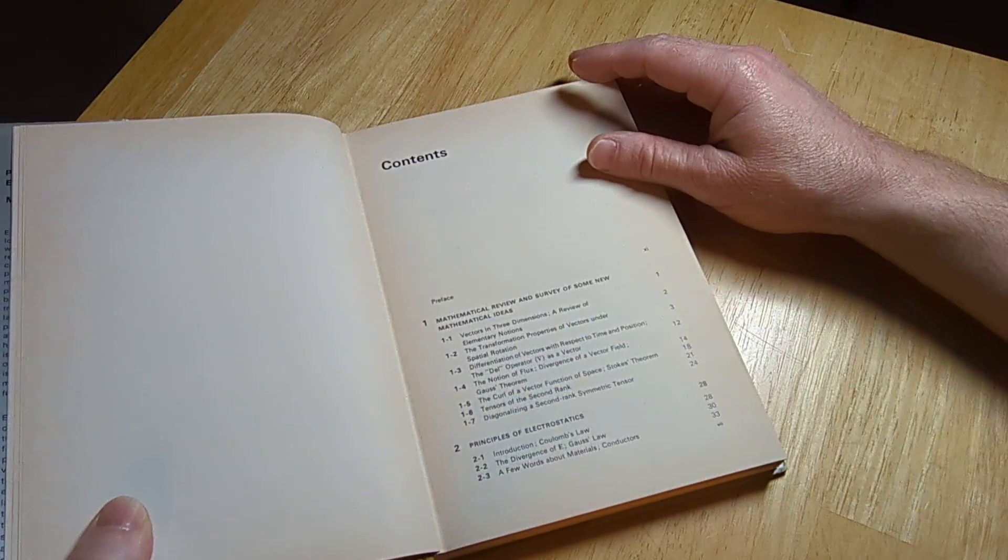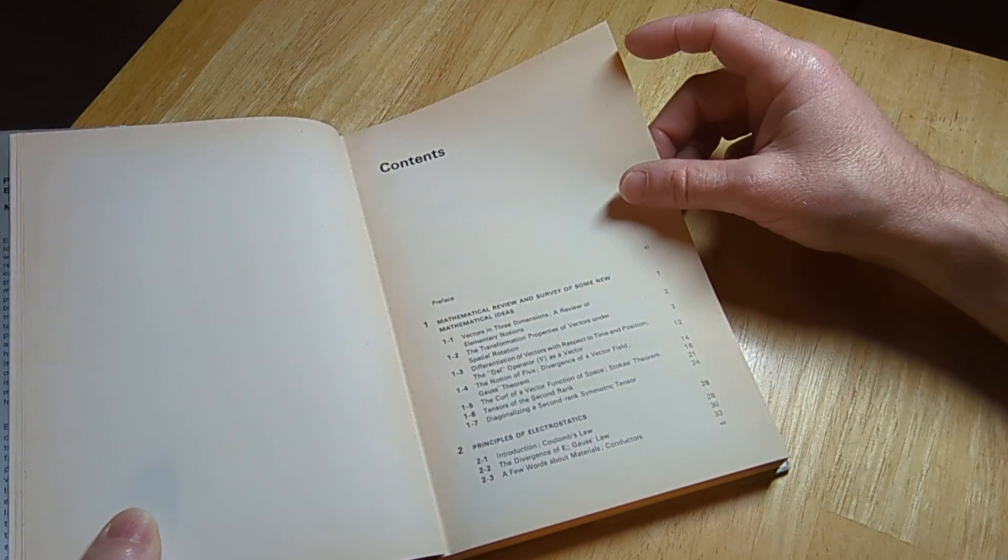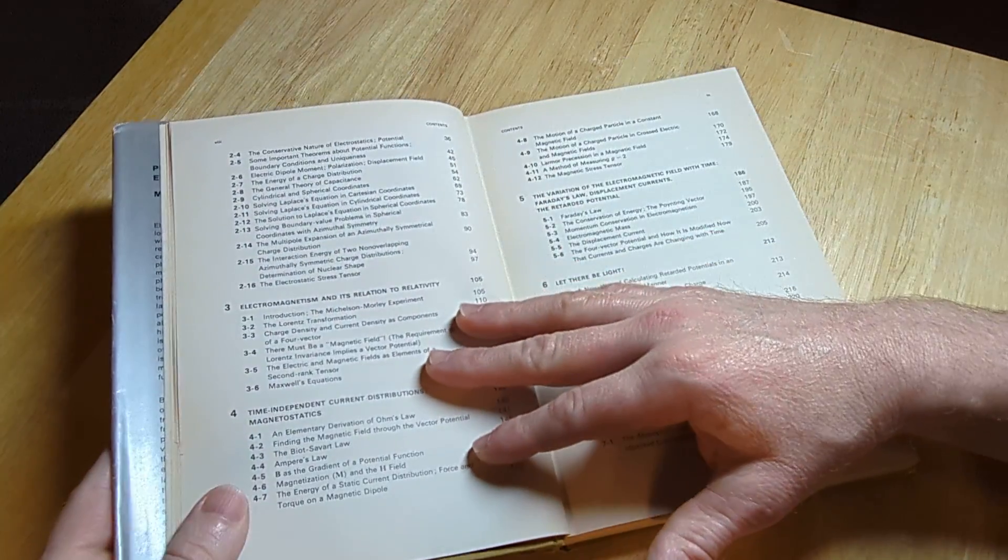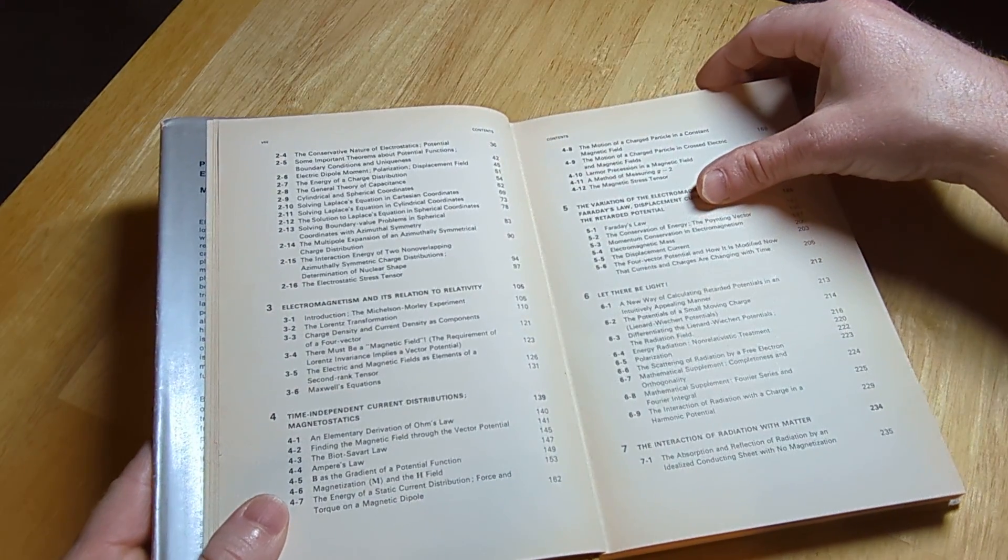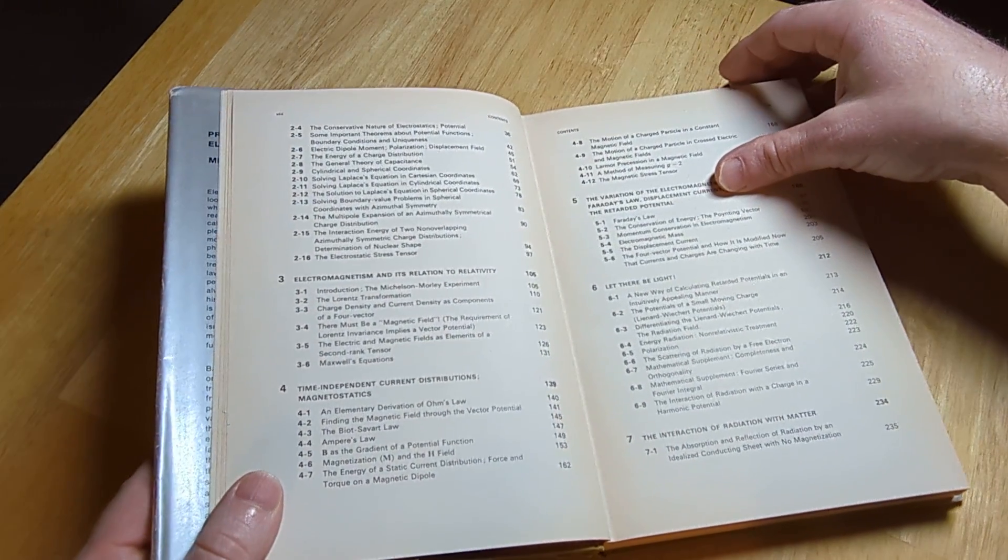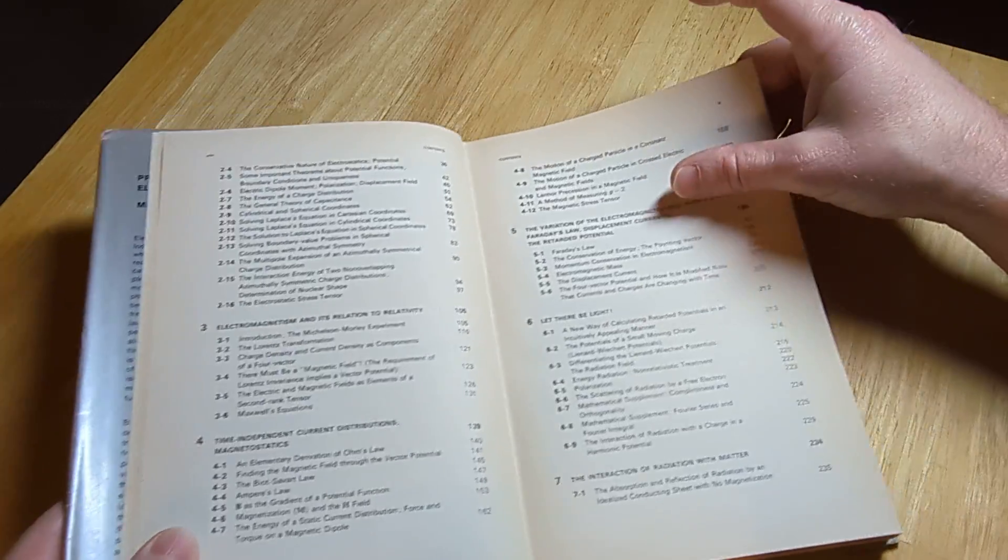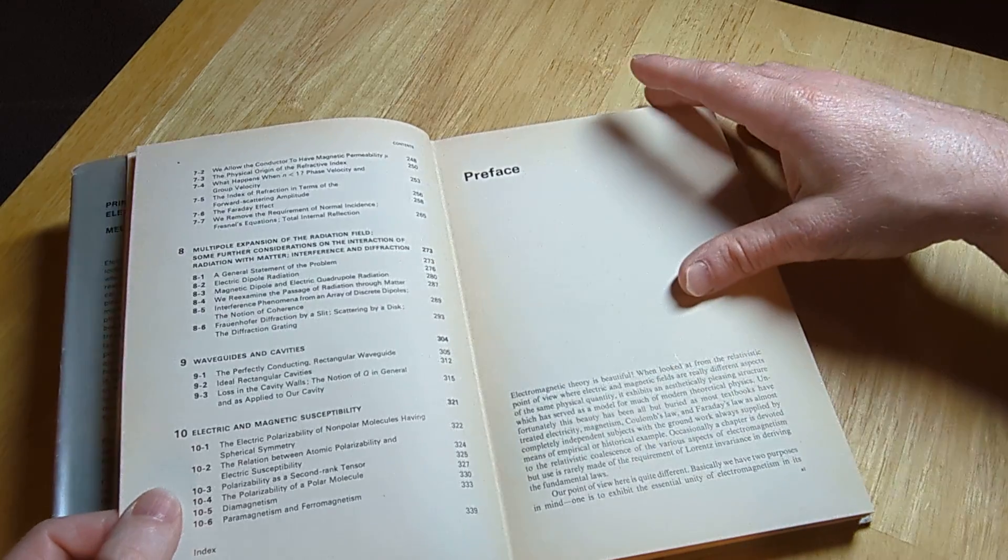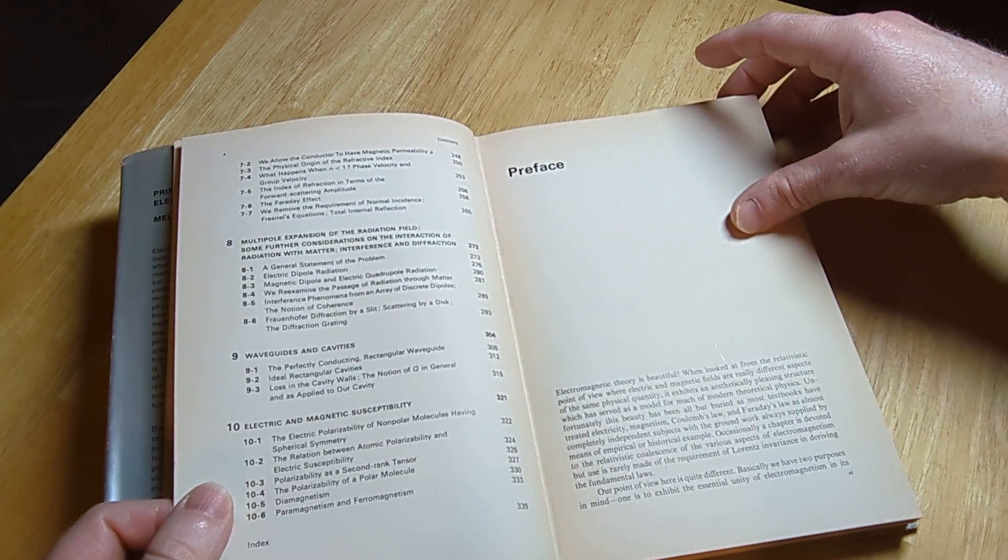So here's a mathematical review and survey of some new mathematical ideas, vectors, principles of electrostatics, electromagnetism and its relation to relativity, and then some more topics and an index.